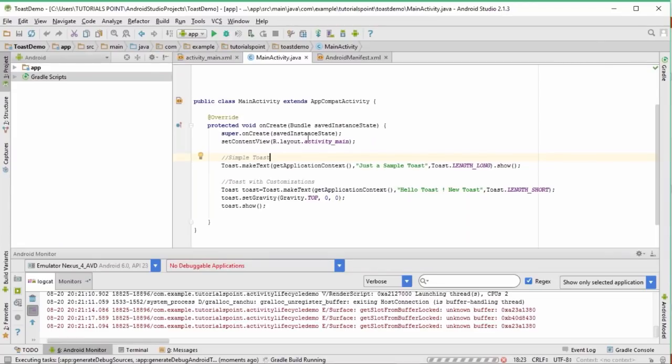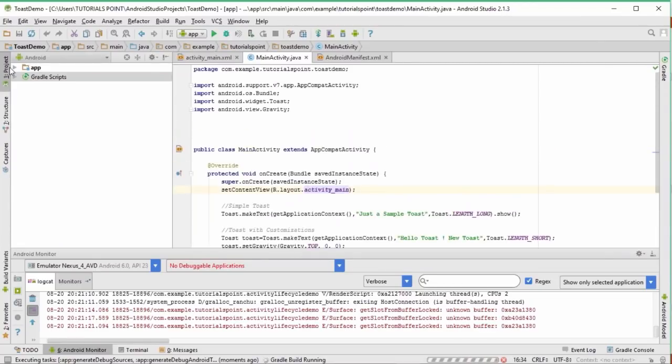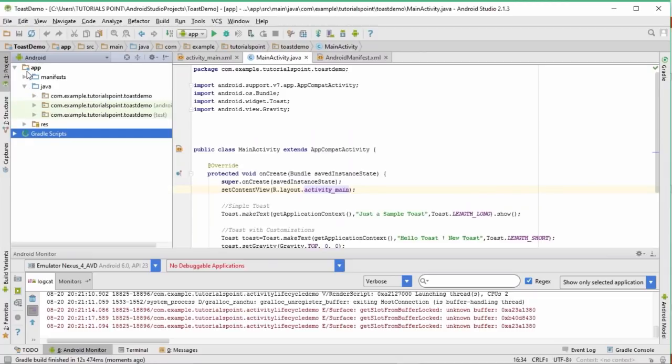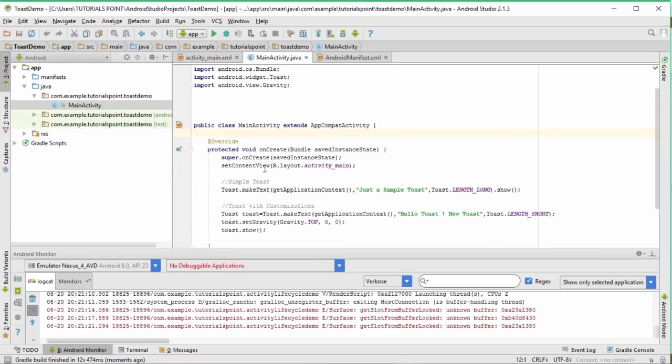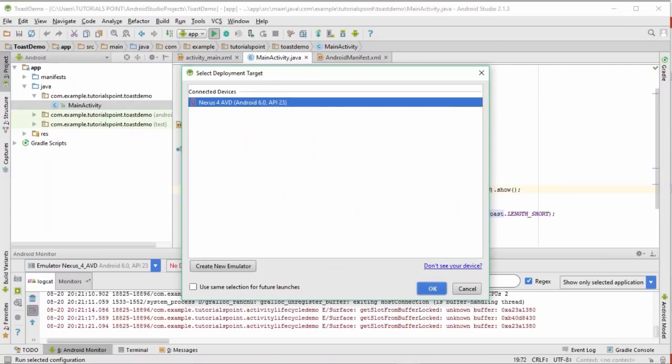What we do is in simple terms, we open up the MainActivity.java file. It is present in the application in Java. Here is our MainActivity.java. After opening this one, in the onCreate method only, I write toast.makeText, getApplicationContext, just a sample toast, toast.lengthLong.show. This method will simply help me make a toast of just a sample toast on my screen. Let me run and see how this method behaves.